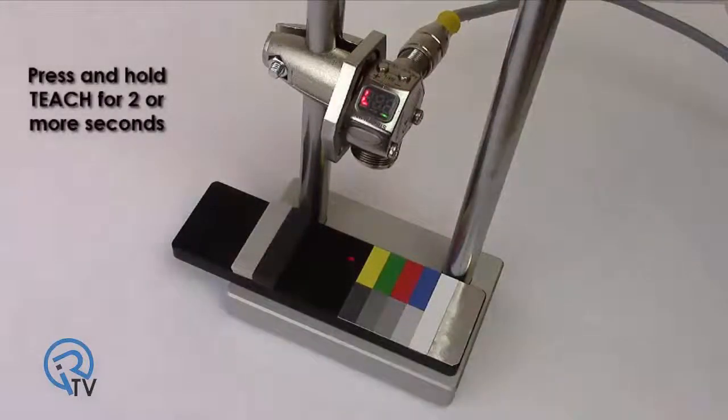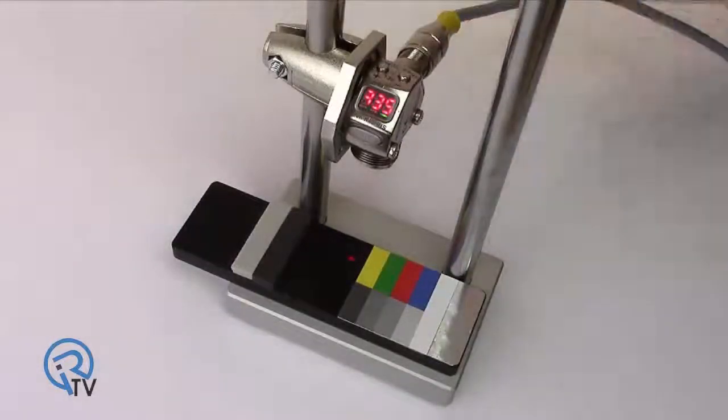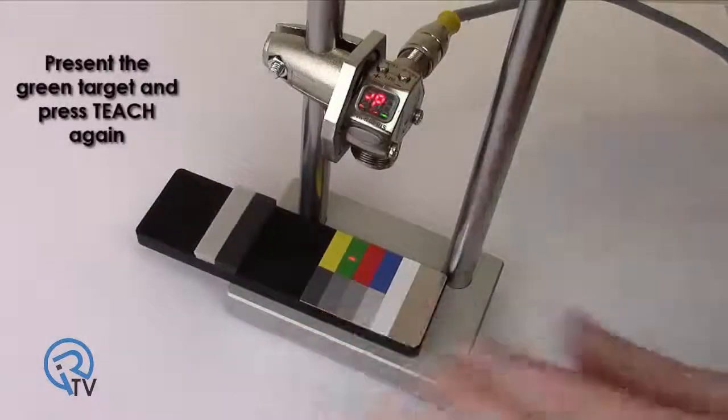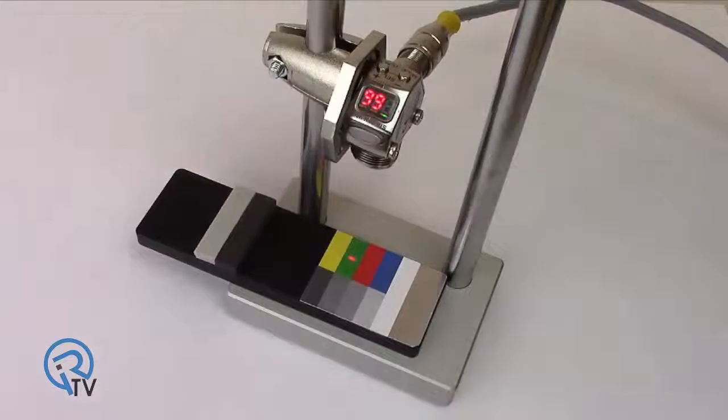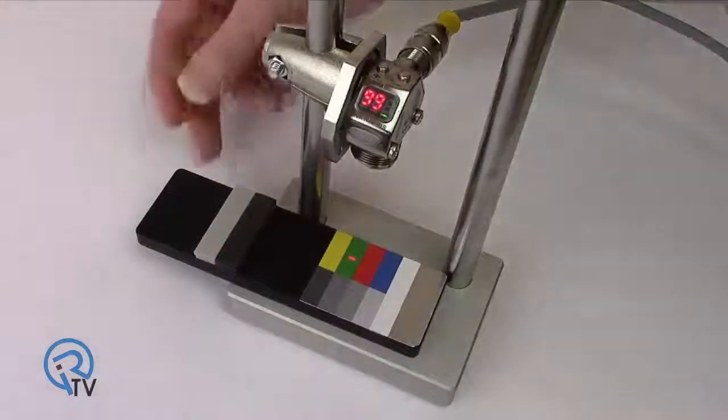Press and hold TEACH for two or more seconds. Present the green target and press TEACH again. The output will be on for all targets brighter than green.